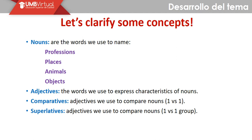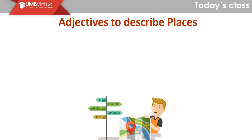Rápidamente vamos a aclarar estos conceptos para poder entender el tema a continuación. Tenemos sustantivos, que son palabras que utilizamos para nombrar profesiones, lugares, animales u objetos. Tenemos adjetivos que nos ayudan a expresar características de los sustantivos. Los comparativos son adjetivos que utilizamos para comparar cosas, una versus otra. Y finalmente tenemos superlativos que son adjetivos que utilizamos para comparar cosas cuando tenemos uno versus un grupo.